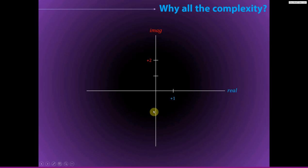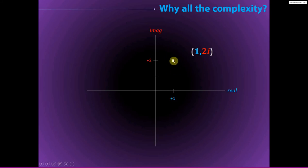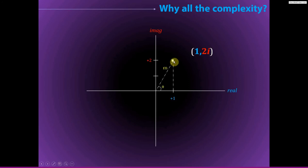One of the things that makes complex numbers so powerful is that we can represent them on a two-dimensional plane. Instead of x and y axes, we have a real and an imaginary axis, and we can represent a complex number as a point — for example, 1 on the real axis and 2 on the imaginary axis. We can then think of this coordinate as the endpoint of a vector from the origin to that point, and from there extract the length (magnitude) of the line and the angle relative to the positive real axis.